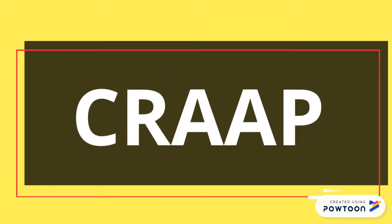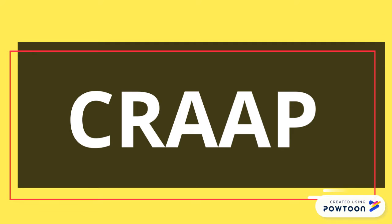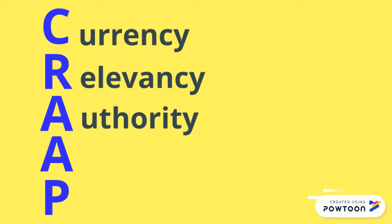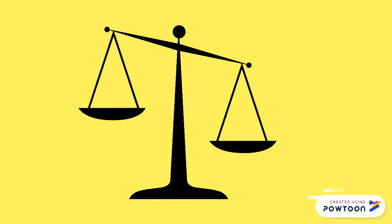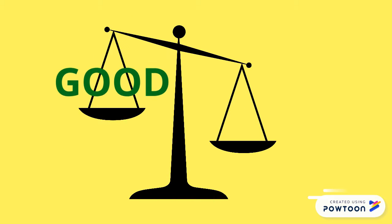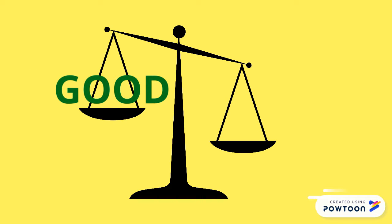Let the CRAAP method help you. CRAAP stands for Currency, Relevancy, Authority, Accuracy, and Purpose. When you use these criteria to evaluate a source, you'll get a good idea of if you should use that source or not. So let's talk about the CRAAP method.